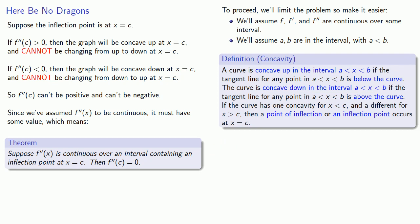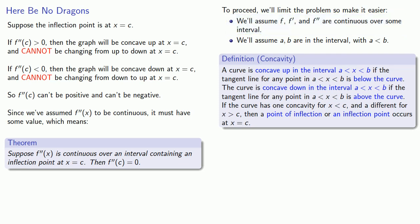This follows because we've assumed that our second derivative is continuous and has a value at c. But there is always this other possibility if our second derivative is not continuous — if it can't be positive and can't be negative, it might be undefined.